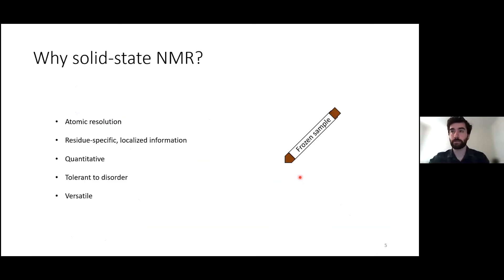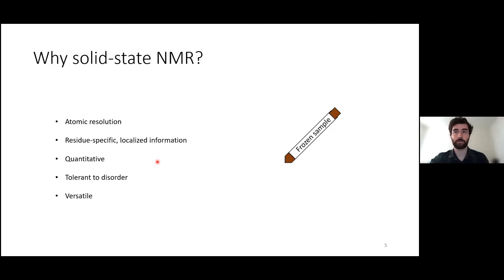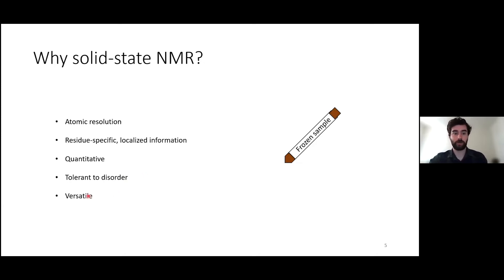Solid-state NMR is a great tool for this. Its benefits include providing atomic resolution with residue-specific and highly localized information. It can also be quantitative, which is very important if we want to understand the different populations of various structures and structural intermediates. NMR is also moderately tolerant to disorder, which is very important because rapidly frozen samples are highly disordered — they lack long-range order, and an unstructured ensemble of proteins when frozen forms a completely disordered mess. There's also a whole host of NMR tools that we can use to probe these systems.